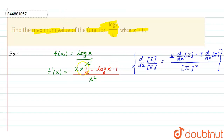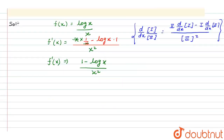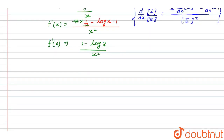From here, the x cancels out, and we get f'(x) = (1 − log x) divided by x². Now we know that for a maximum or minimum value, we have to set f'(x) equal to 0.